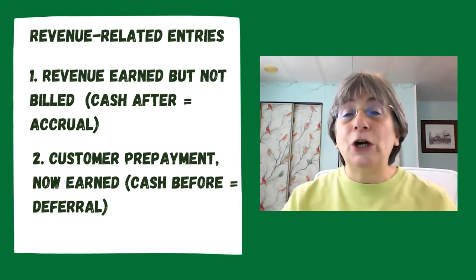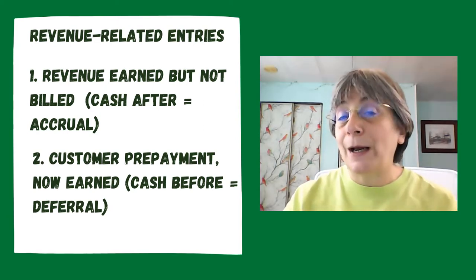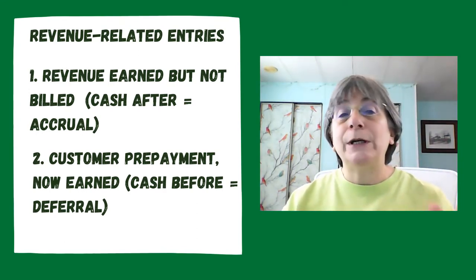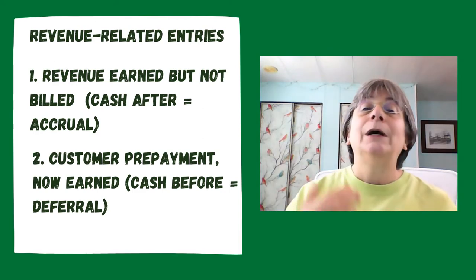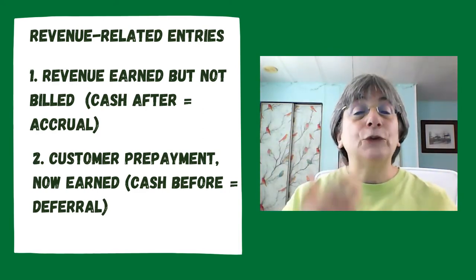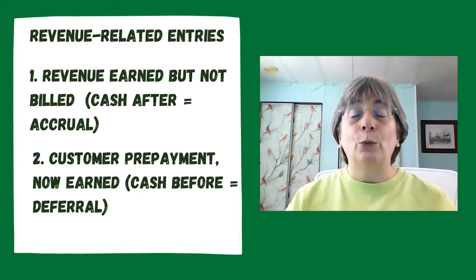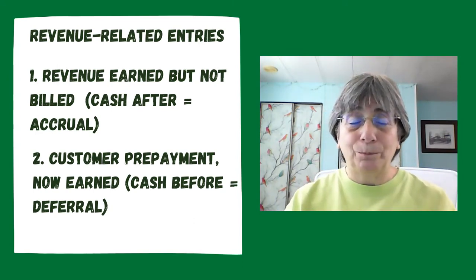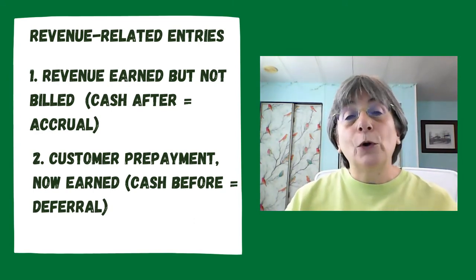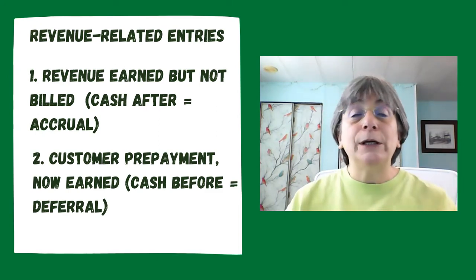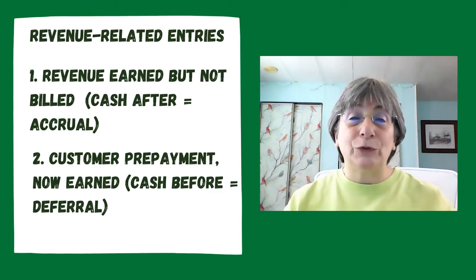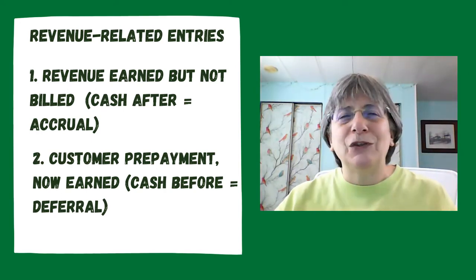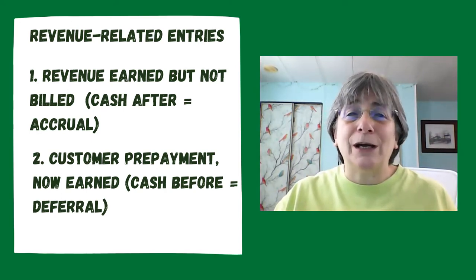Every adjusting journal entry is going to impact one balance sheet account and one income statement account. Balance sheet accounts are assets and liabilities; income statement accounts are revenue and expenses. So we're going to be impacting one balance sheet account and one income statement account in every transaction. Let's look at some examples, because that's what's really going to make this make sense.